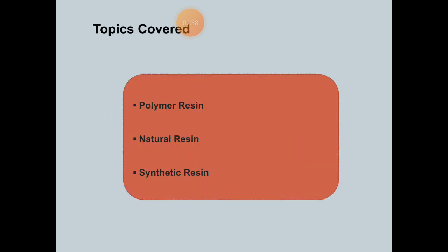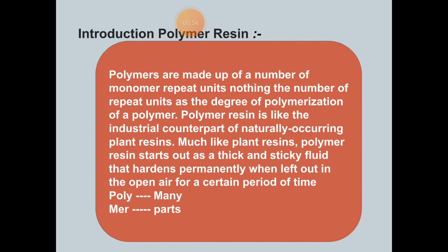Today's lecture, we will discuss polymer matrix composites, in which some topics are covered. First is polymer resin, natural resin, and synthetic resins. Polymer resins are made up of a number of monomer repeat units. The number of repeat units determines the degree of polymerization of a polymer. Polymers are made up of a number of monomers — 'poly' means many and 'mer' means parts.